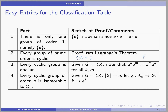Fact 3: every cyclic group is abelian. As a quick proof, if g is generated by a, then every element of g is of the form a to the something, and all of the a to the somethings commute with each other. Fact 4: every cyclic group of order n is isomorphic to Zn. As a sketch of the proof, if g is generated by a, you can form an isomorphism from Zn to g that takes k to a to the k, and you can check that that's an isomorphism.